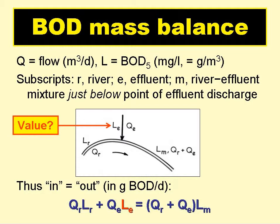So the BOD mass balance equation is: Q_R × L_R + Q_E × L_E = (Q_R + Q_E) × L_M, where Q is the flow in cubic metres per day, and L is the BOD in milligrams per litre, which is the same as grams per cubic metre. The subscripts R, E, and M refer to the river, the effluent, and the river–effluent mixture.